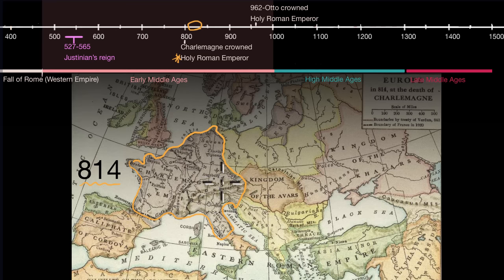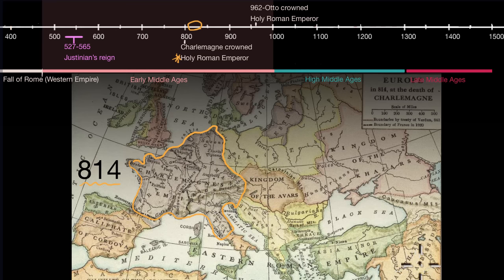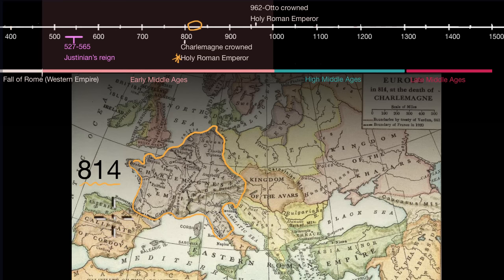Another major feature of the Early Middle Ages visible on this map is that Islam, in the seventh and eighth centuries, comes out of Arabia and is able to conquer much of the Middle East, Persia, North Africa, and much of what we consider today to be modern-day Spain. You can see the Caliphate of Cordoba right over here, and the Abbasids in the east, who also controlled much of North Africa.